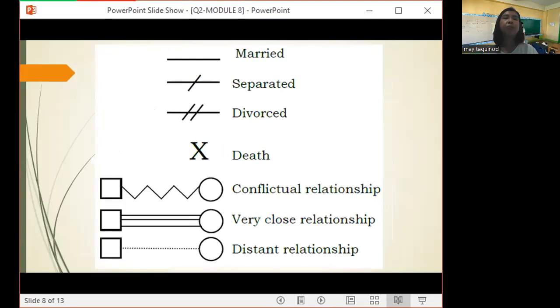Next, we have a straight line for married, then a straight line with one slant line at the center for separated, then a straight line with two slant lines at the center for divorce, then an X or a cross mark for death.